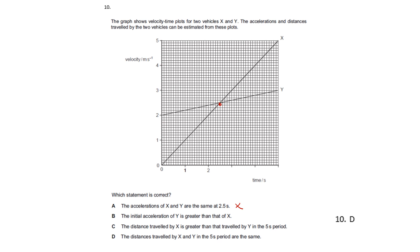The initial acceleration of Y is not greater than X — X has the steeper gradient and therefore greater acceleration. Considering whether the distances are the same or different over the five-second period: X has an extra area traveled compared to Y in one region, but also travels less in another region. Because those two areas are equal, they cancel out, and the distance traveled by X and Y in the five-second period is the same — answer D.